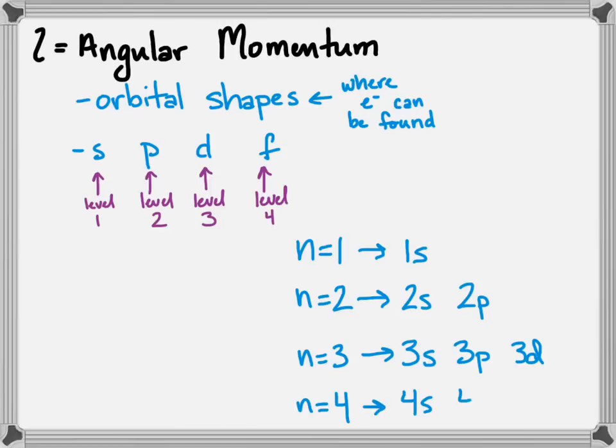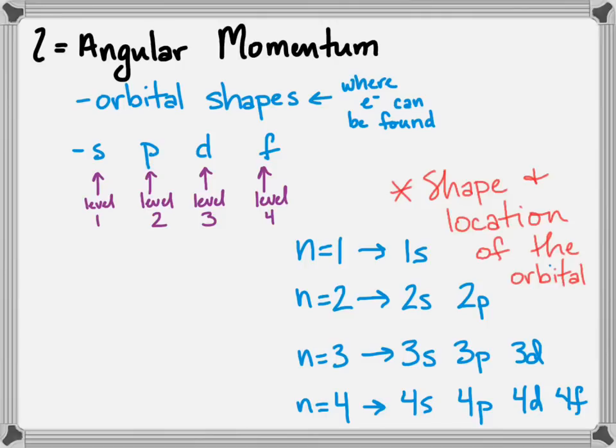And when n equals 4, you have 4s, 4p, 4d, and 4f. This is just telling you where you're going to find those electrons, where they're most likely to be found, and what shape they're most likely to be found in.